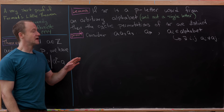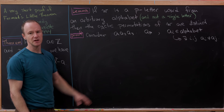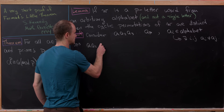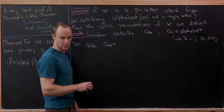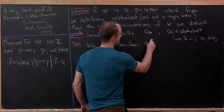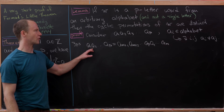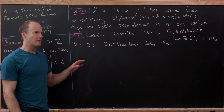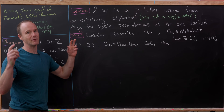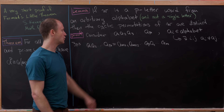Now let's assume we have two cyclic permutations of this word that are the same — we're working towards a contradiction. So suppose that a1, a2, ..., ap equals a_{m+1}, a_{m+2}, ..., ap, a1, ..., am. That would be a cyclic permutation of the original word. We can rename the original version of the word if needed. Since these two words are the same, a1 must equal a_{m+1}, because the first letters match.